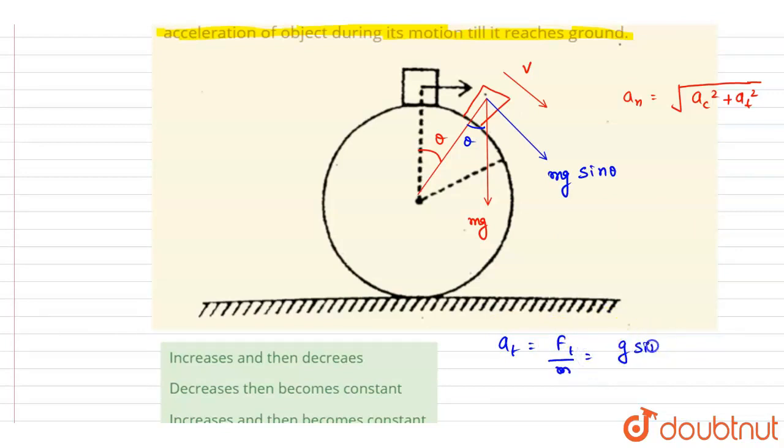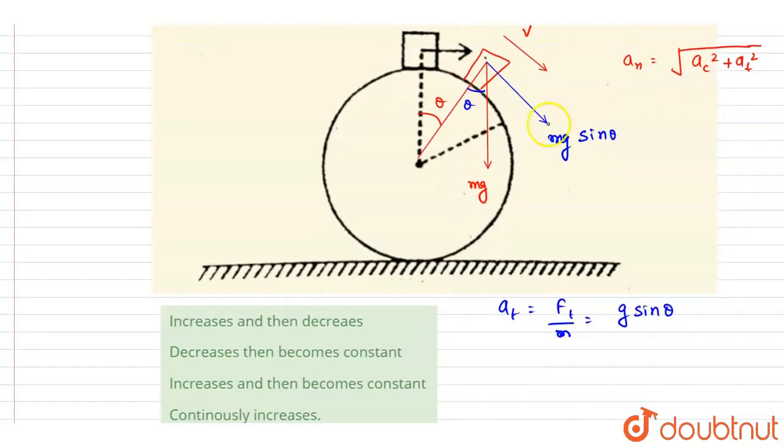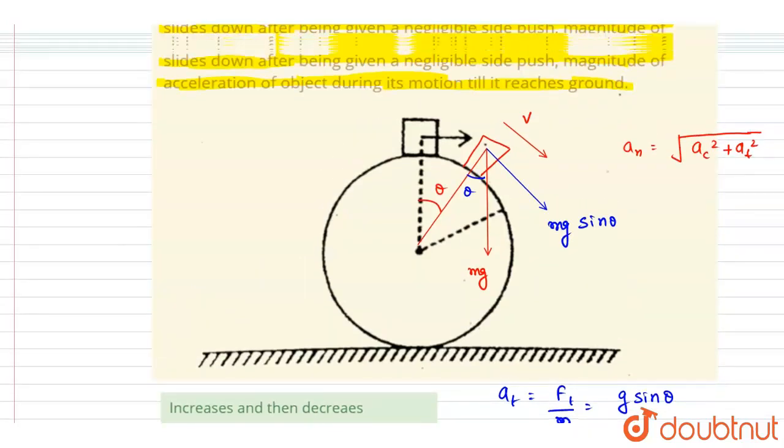It will be g sine theta. And if you see here, the velocity goes on increasing. If you see, the theta is increasing with time and the velocity is also increasing with time for obvious reason that